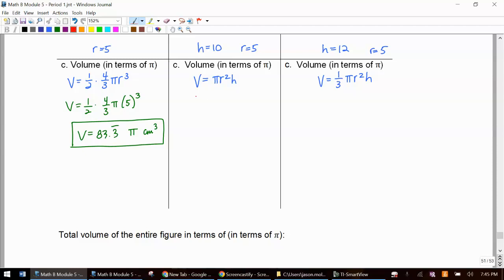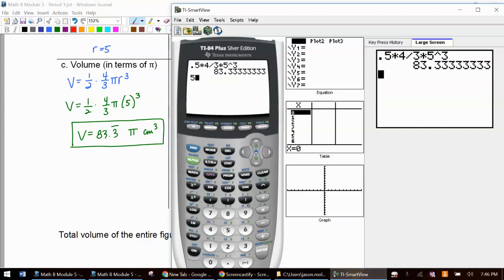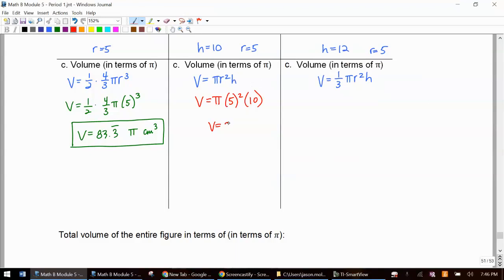Next up, we're going to do the cylinder. So we've got five. This time it's squared times 10. So 250π. Feel free to pause the video if I'm going too fast and you're trying to type some of this out or fill this out.